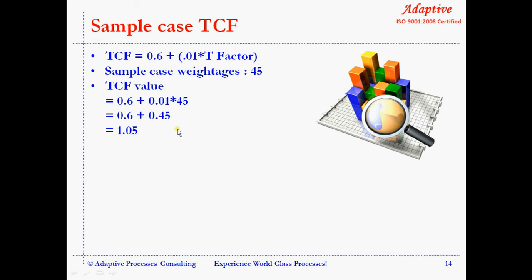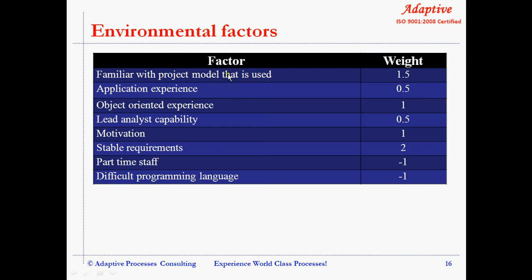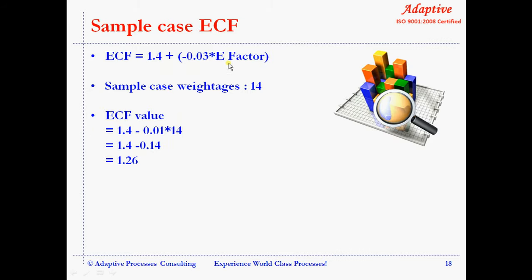Environmental complexity factors originate from the project environment. The table shows the weightage given for each environmental factor. The environmental complexity factor (ECF) is calculated similarly to TCF. The formula for ECF is: 1.4 minus 0.03 multiplied by the E-factor. For the sample case, ECF is 1.26.